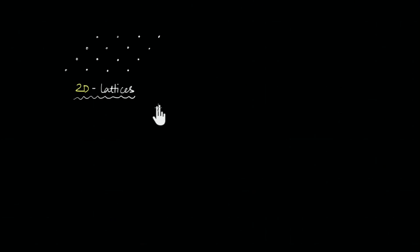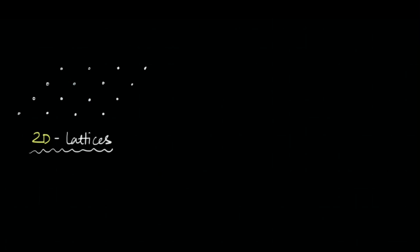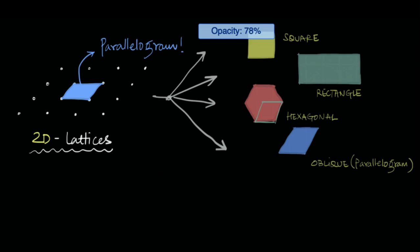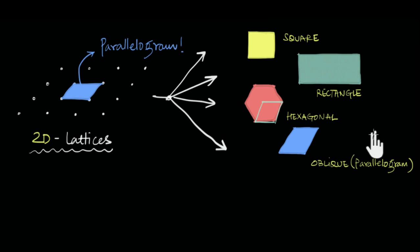Before we do that, let us take a moment and retrospect about 2D lattices. In two-dimensional lattices we found that a triangle cannot be a valid unit cell because a triangle cannot fully cover a two-dimensional area only via translation. The smallest possible shape was in fact a parallelogram, and by tinkering with the symmetry of this parallelogram we found that there are four fundamentally different shapes having different symmetries that could cover a 2D space only via translation.